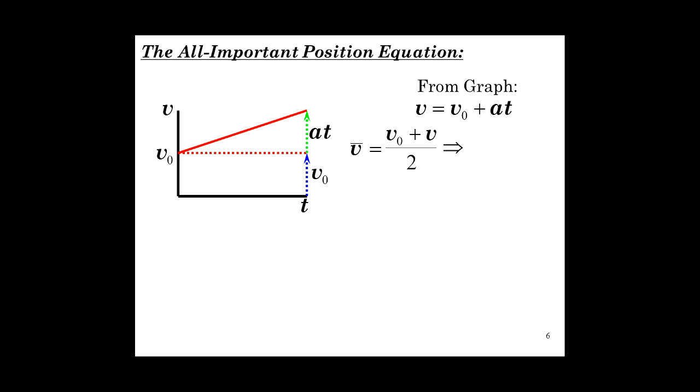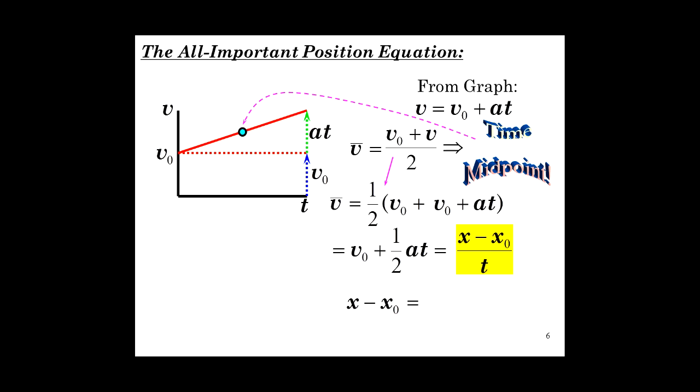So the average velocity, since this is a uniform change from v zero to v, it's just the initial velocity, plus the final velocity, divided by 2, and that gives us the value at the time midpoint, which is right there. Well, rewriting this, we have average velocity is one-half v zero plus the velocity, and the velocity is v zero plus a t, so I put that here. And then that's v zero plus one-half a t, but that's average velocity, which is displacement, divided by time.